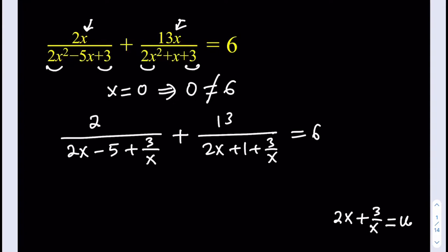If you do that, we're going to be getting 2 over u minus 5 plus 13 over u plus 1, and that's going to equal 6. Which is nice because, obviously, this is a much simpler equation. First of all, we have no quadratic term. Even if we make a common denominator, the highest power we're going to get is going to be u to the second power, which is easily solvable.